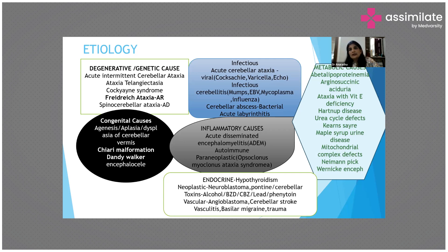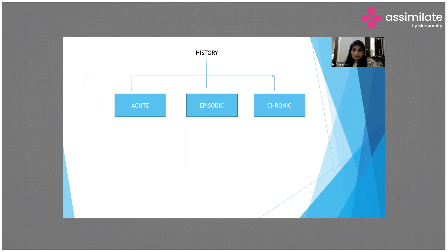So the common causes of ataxia are either inflammatory, genetic, metabolic, infective, congenital, etc. Timeline-wise, ataxia can present as acute ataxia, chronic ataxia, or episodic ataxia. Acute means abrupt onset. Chronic is slowly progressing and gradually worsening. Episodic means sometimes there is ataxia, sometimes the child is normal.